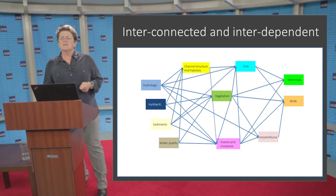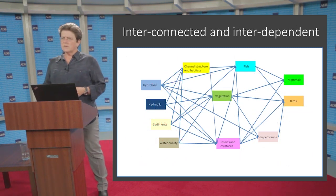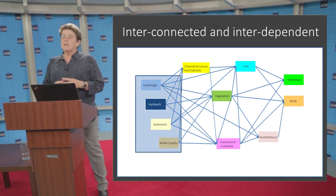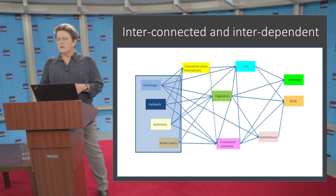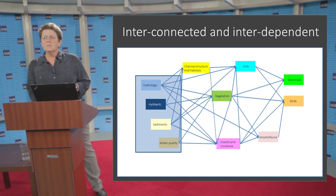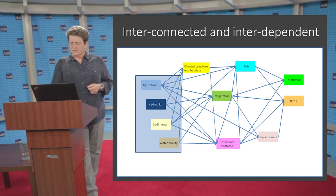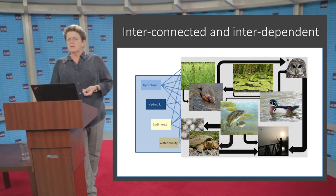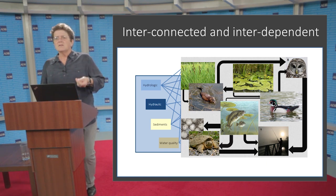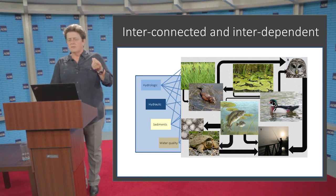These interconnected and interdependent ecosystems are driven largely by the physical attributes of hydrology, hydraulics, connectivity — where is the water going, how deep is it, how fast is it flowing — sediment, and other aspects of water quality. Those are the main drivers of these ecosystems, but they support an intricate array of interconnected, interdependent life: animals and plants that are dependent on the timing and volume of these physical drivers through the system.